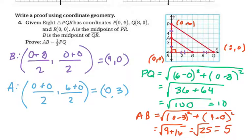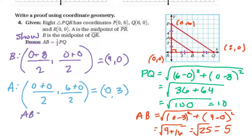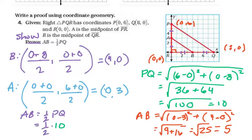In our proof — and if we were doing a two-column proof that's the idea — we are trying to say that AB is half of PQ. Substituting PQ as 10 and AB as 5, we do end up with a true statement: 5 = ½ × 10. So the proof is complete.